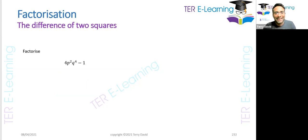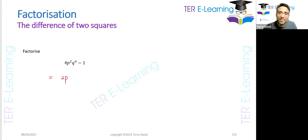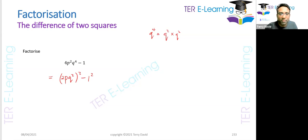Let's look at another one. Again we have two variables separated by a minus sign, and we have 1 again. I can write this as (2p) squared — now q to the power 4 is the same as q squared multiplied by q squared, so q to the power 4 can be written as (q squared) squared. So this becomes (2pq squared) squared minus 1 squared, which gives us (2pq squared plus 1)(2pq squared minus 1).